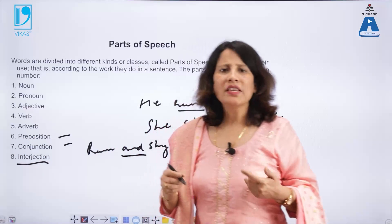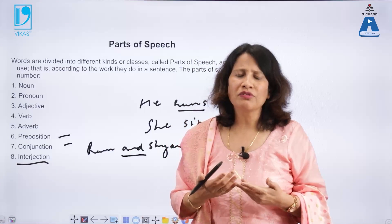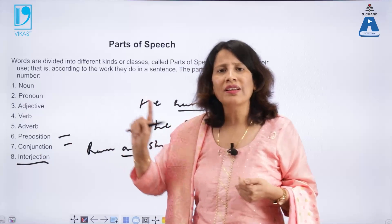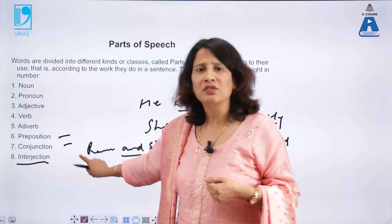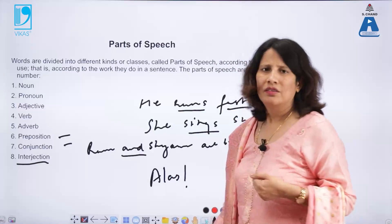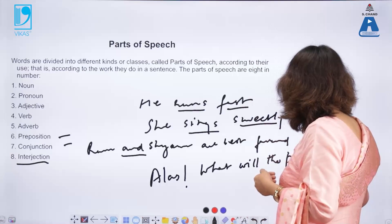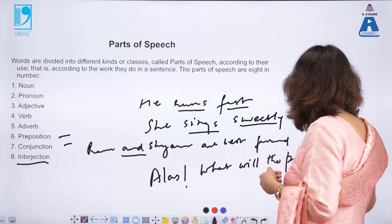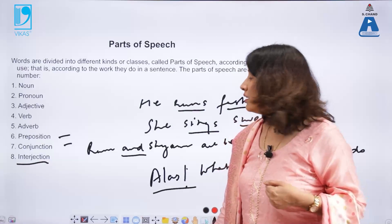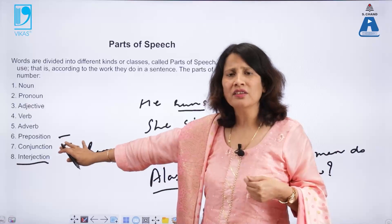An interjection is used to interject or give a break, showing sudden feelings or emotions. It is not grammatically connected to the rest of the sentence — unlike an exclamatory mark, which goes at the end of the sentence. For example, 'Alas! What will the poor man do now?' — 'Alas!' with the exclamatory mark is an interjection.